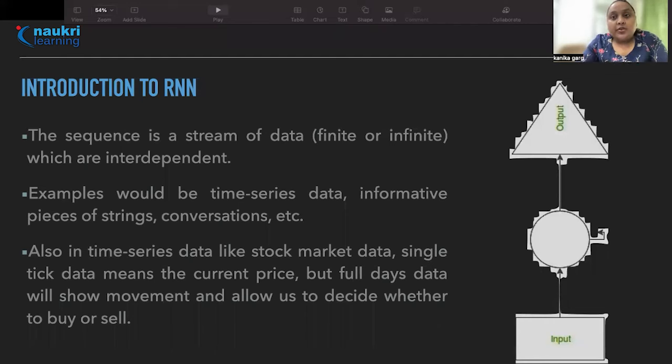But imagine a scenario like sentence generation or text translation. All the words generated are dependent on words generated before them. So in such scenarios CNNs could never be favored. So we need to have some bias or correlations based on our previous output.